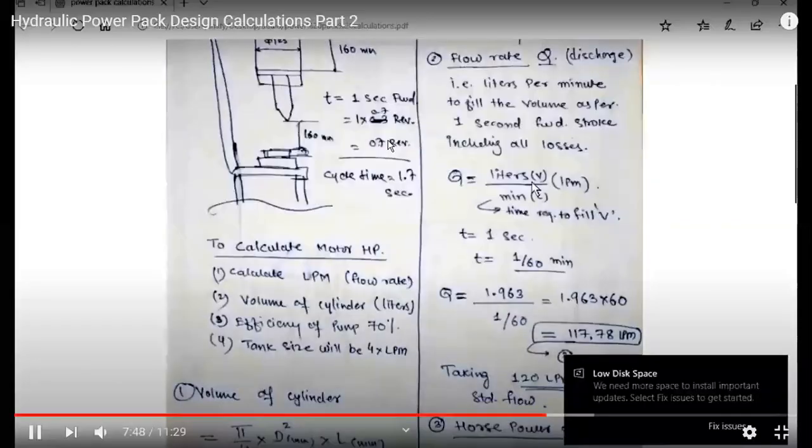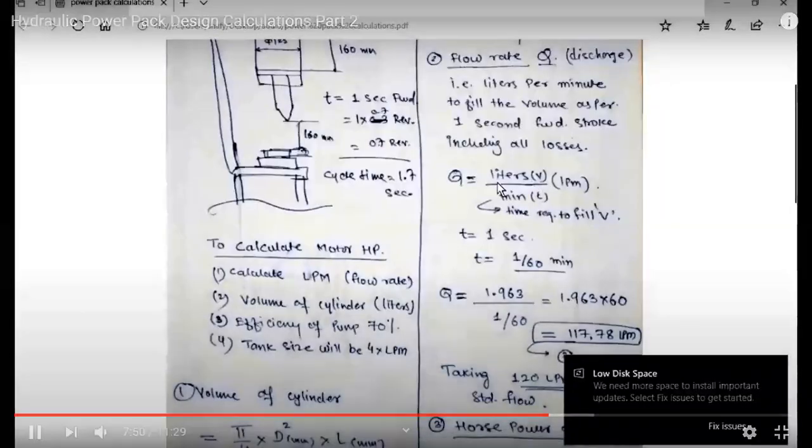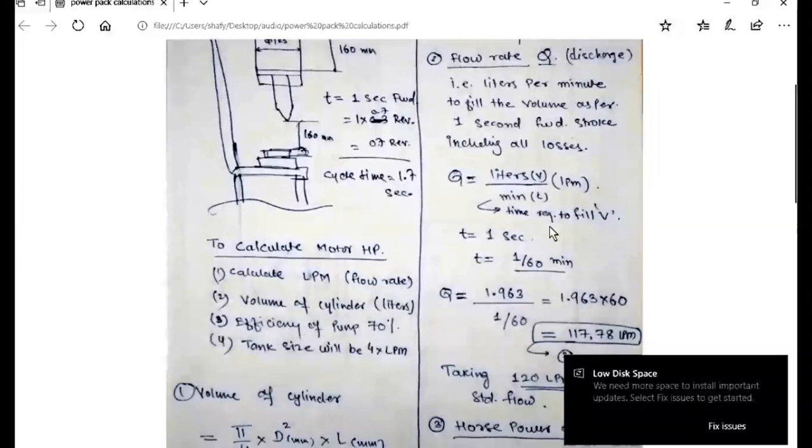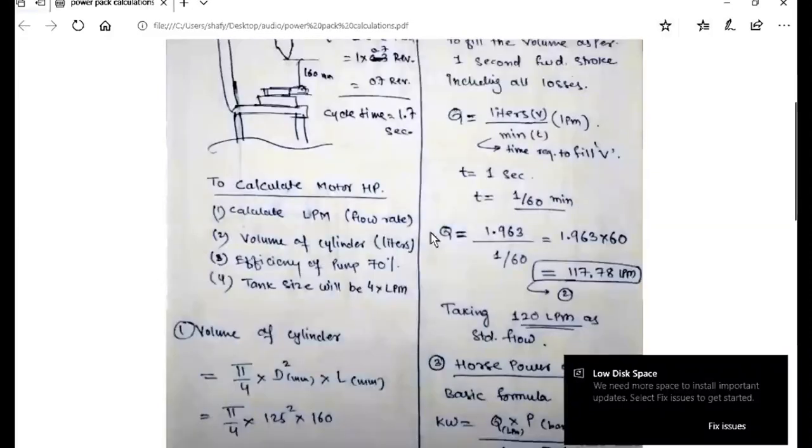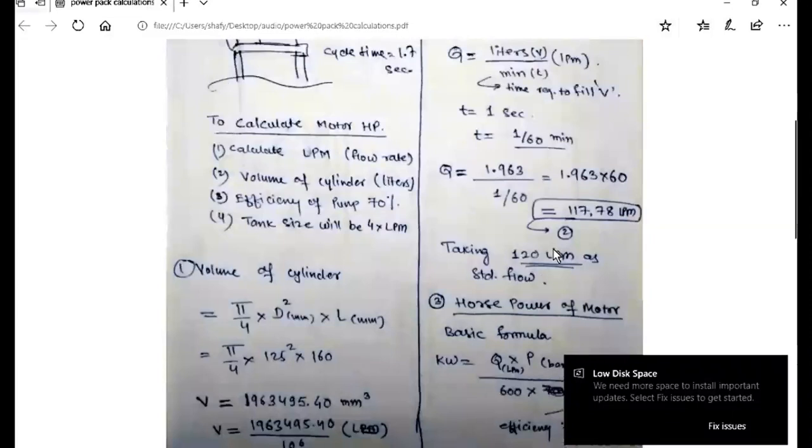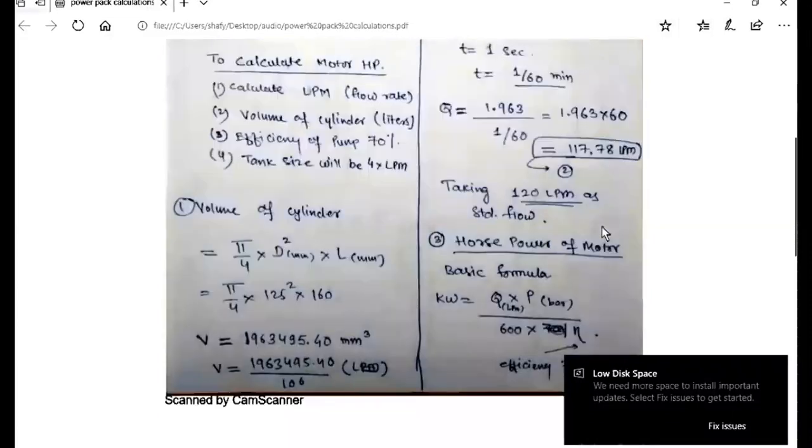So we got the volume as 1.963 liters. To calculate per minute, this is for one stroke, so per minute, if you take 1.96 as approximately 2 liters per second times 60, approximately 120 liters per minute, that is our flow rate. If you take in decimals, 117, approximately 120 liters per minute, that is our pump capacity or requirement.